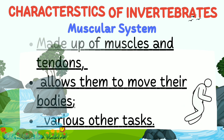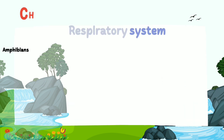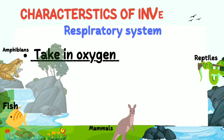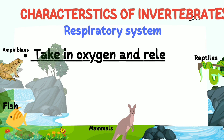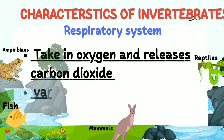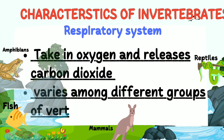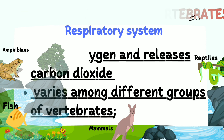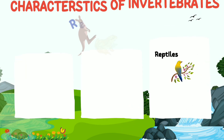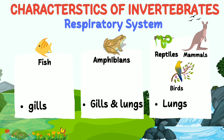Vertebrates have a respiratory system that allows them to take in oxygen and release carbon dioxide. The respiratory system varies among different groups: fish have gills, amphibians have lungs and gills, whereas reptiles, birds, and mammals have lungs.